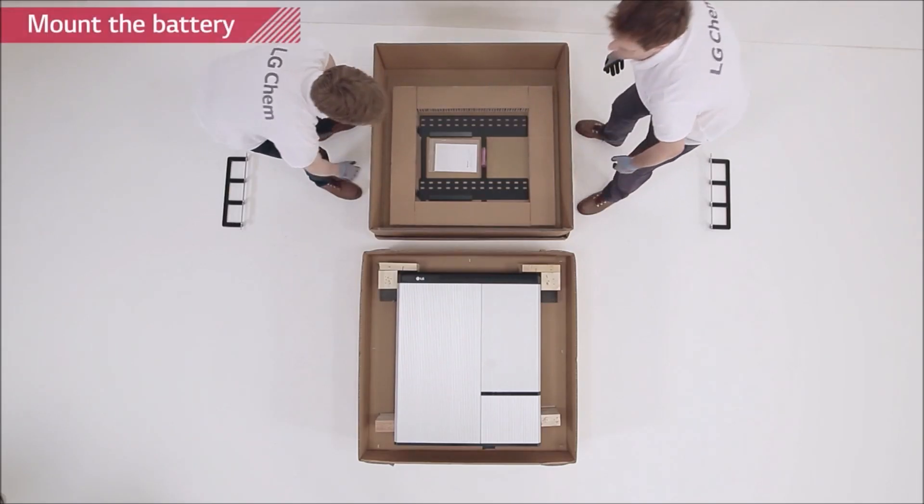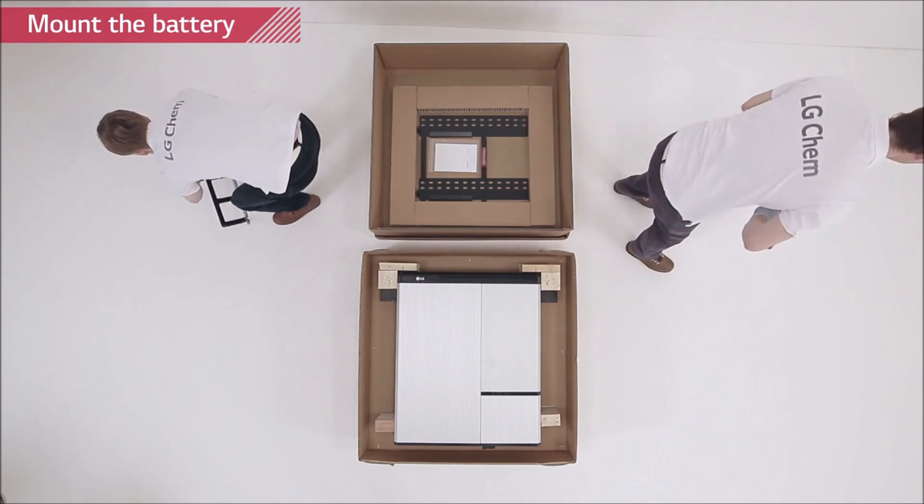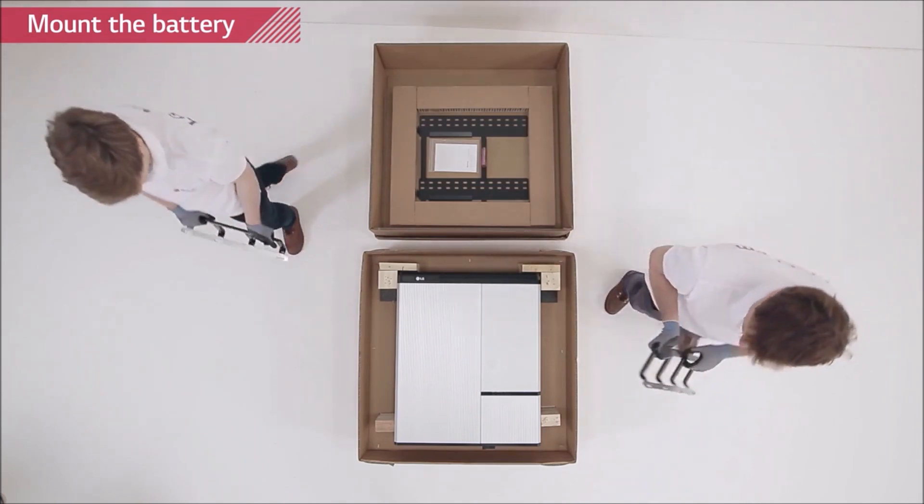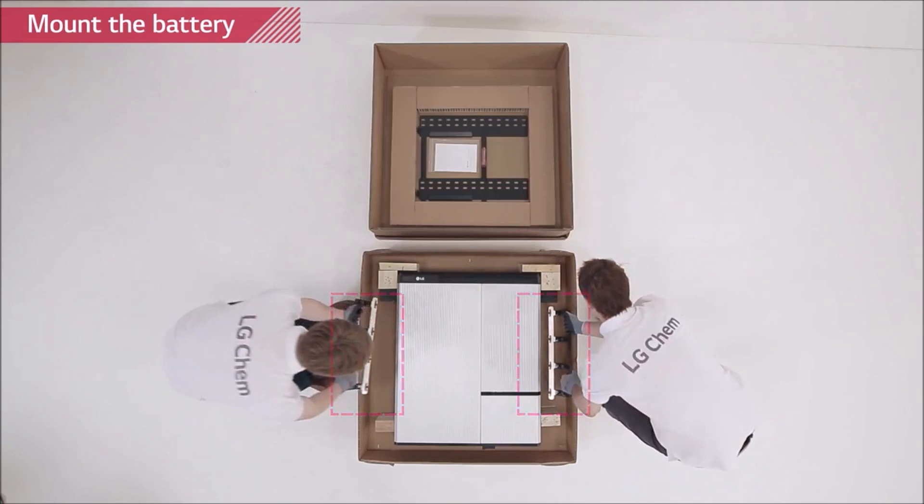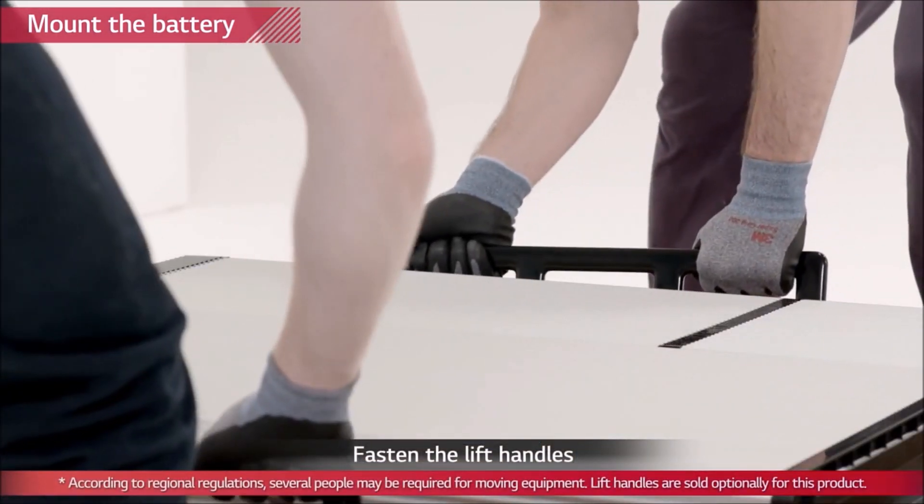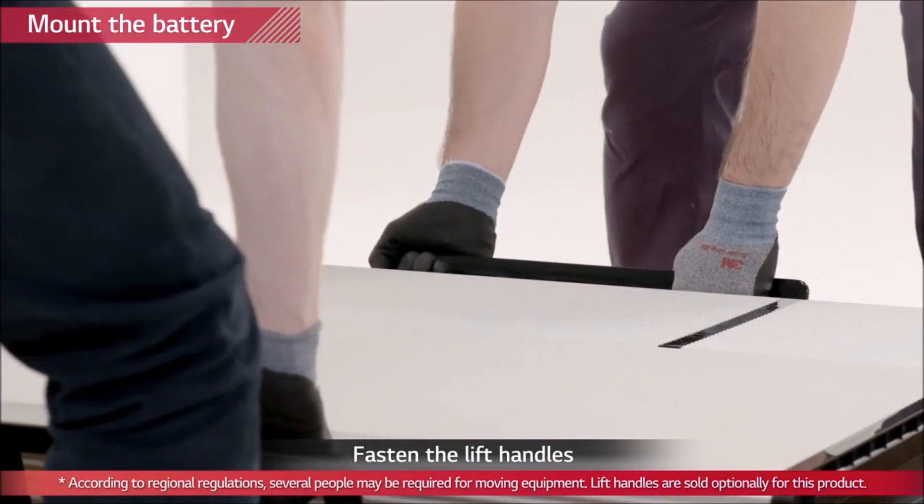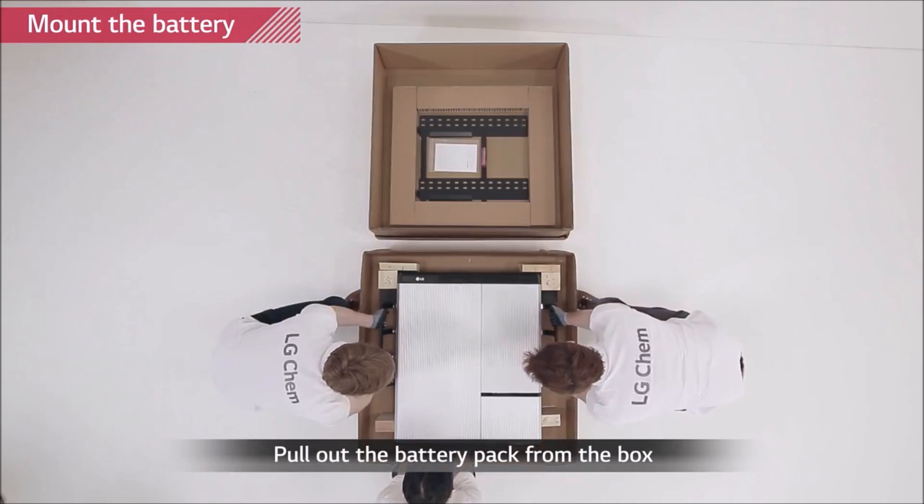Attach the lifting handles to the hex socket screws located at the back of both sides of the Rezu pack. Lift the battery pack using the handles. Handle the Rezu 10H carefully as it weighs about 100 kilograms. Note that the wall on which the battery pack will be mounted has a capability to support weight over 150 kilograms.